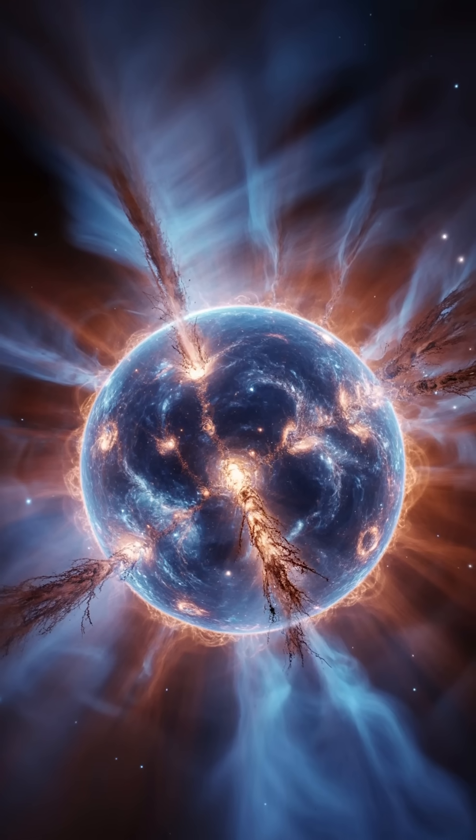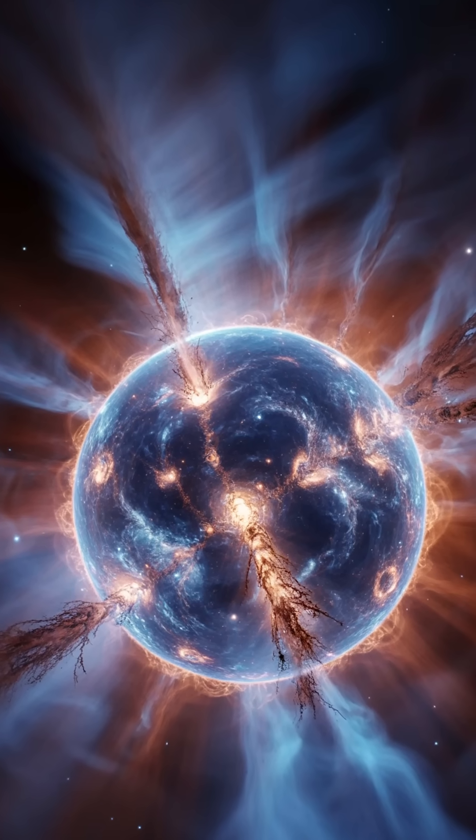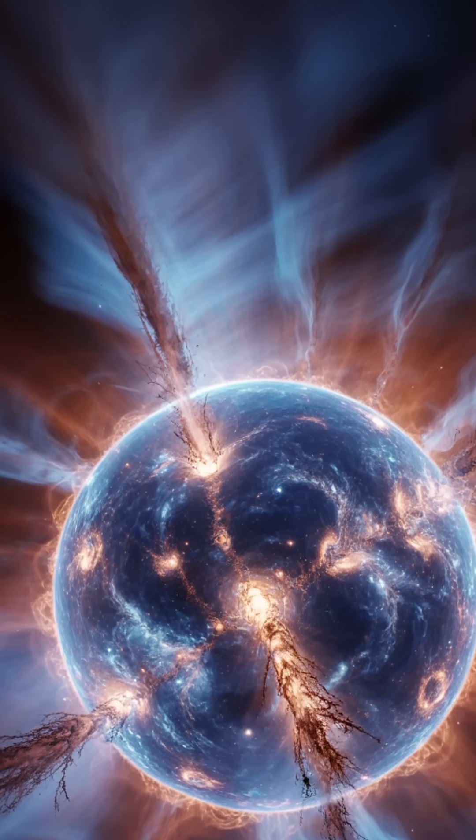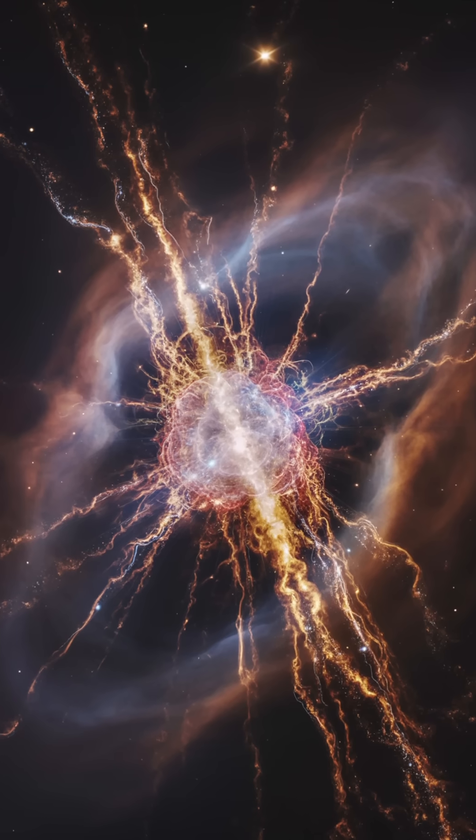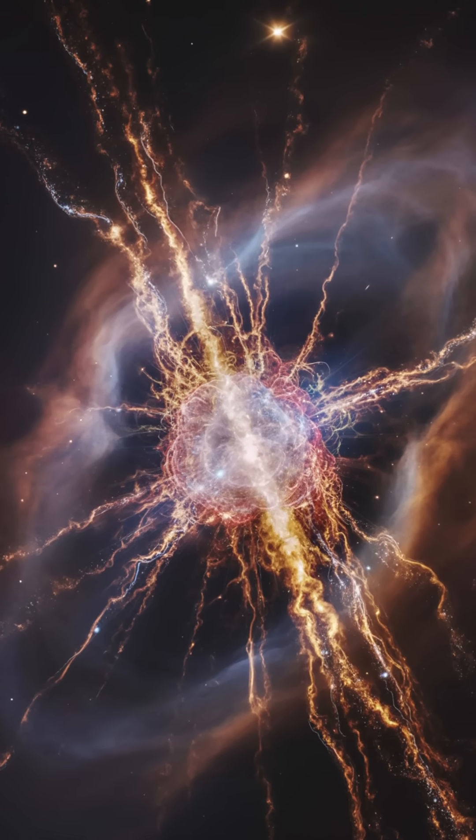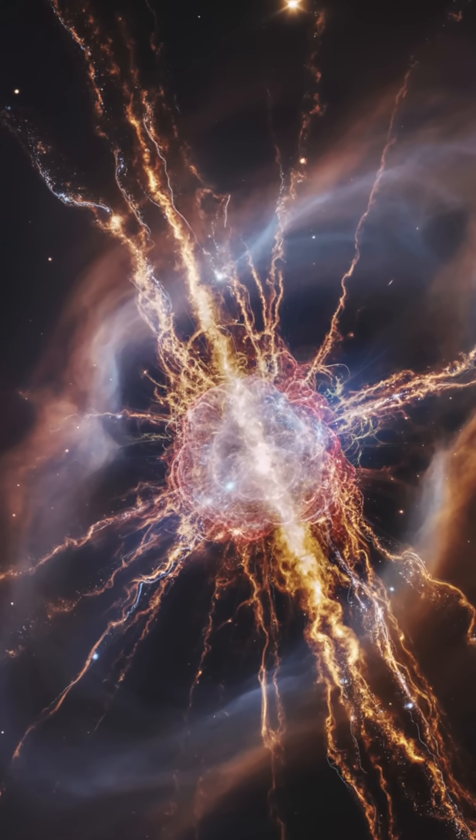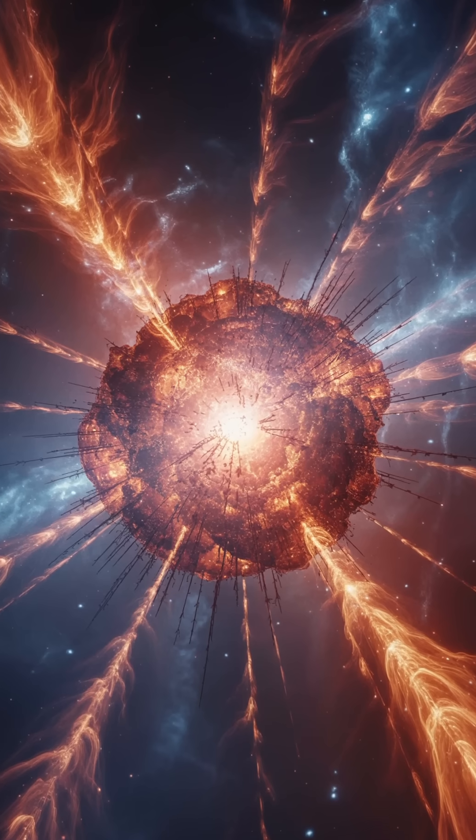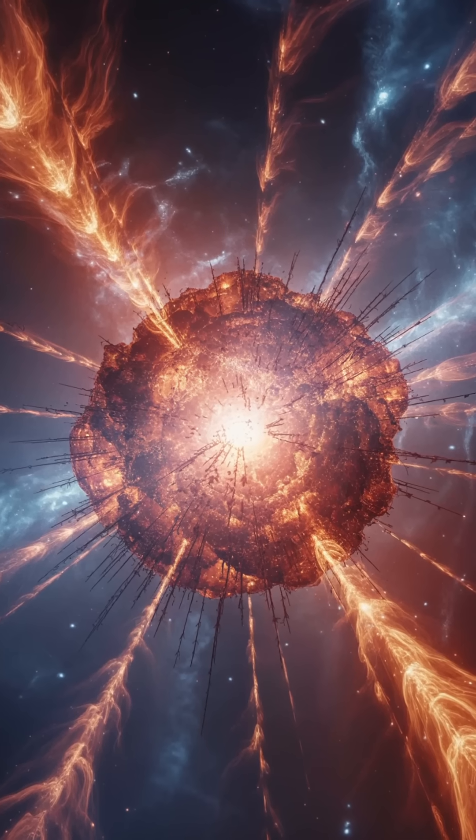What's left behind is the hot, dense core, a white dwarf roughly the size of Earth but with a mass comparable to the sun. It no longer burns fuel, it simply glows faintly with residual heat, slowly cooling over trillions of years until it becomes a cold, dark remnant known as a black dwarf, a stage the universe hasn't reached yet, as it's not old enough.